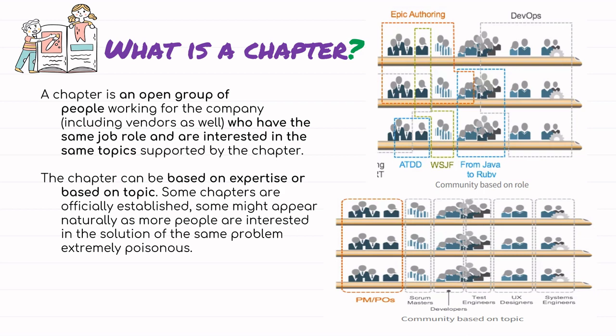You can have chapters based on different practices — for example, a DevOps chapter, a Java or Ruby chapter, a developers chapter, or chapters based on roles: chapters of Scrum Masters, test engineers, UX designers, or system engineers. Based on role and expertise, you can divide your chapters.